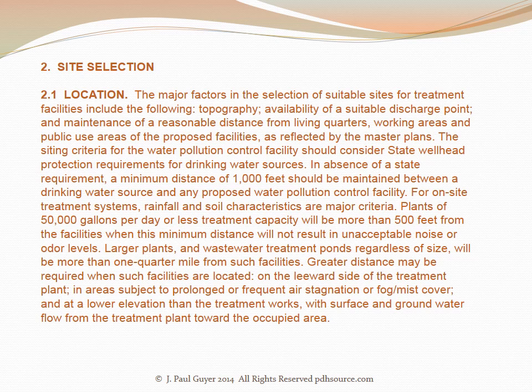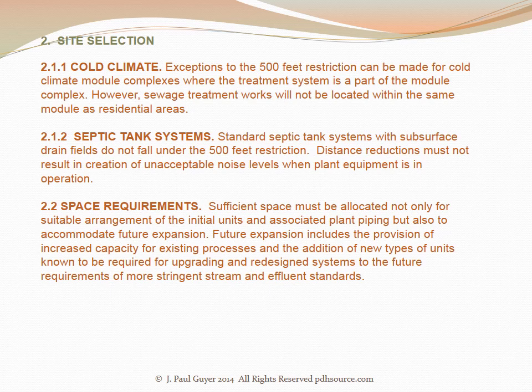Plants of 50,000 gallons per day or less treatment capacity will be more than 500 feet from the facilities when this minimum distance will not result in unacceptable noise or odor levels. Larger plants and wastewater treatment ponds, regardless of size, will be more than one quarter mile from such facilities. Greater distance may be required when such facilities are located on the leeward side of the treatment plant, in areas subject to prolonged or frequent air stagnation or fog and mist cover, and at a lower elevation than the treatment works with surface and groundwater flow from the treatment plant toward the occupied area. Exceptions to the 500 feet restriction can be made for cold climate module complexes where the treatment system is a part of the module complex.